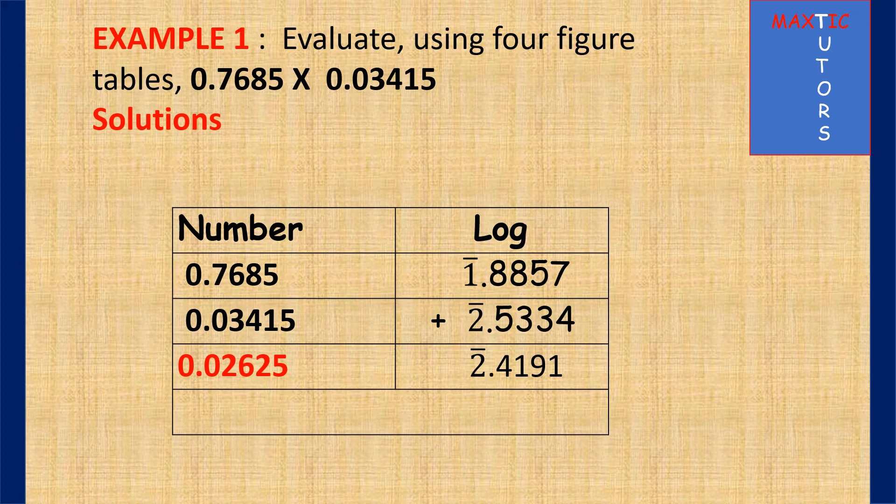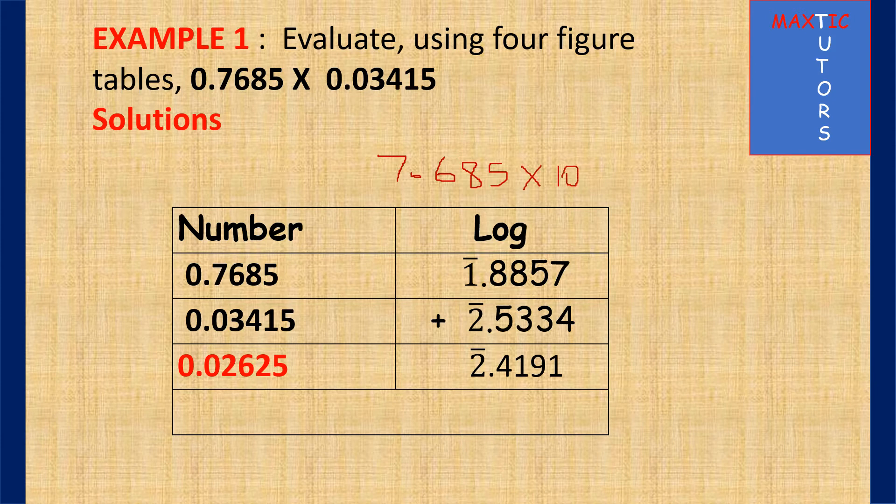Let's go to example 1. You have 0.7685 times 0.03415. If you look at this number 0.7685 and you write it in standard form, we are going to have 7.685 times 10 raised to power minus 1, and the minus 1 is the characteristic here, which is bar 1. Then if you go to 4 figure table and you read 76 under 8 difference 5, which will give you 1.8857.